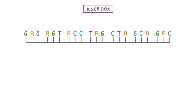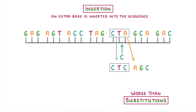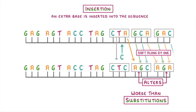An insertion mutation is a bit different — this time an extra base is inserted into the sequence somewhere. For example, if a C was inserted between the T and the A of CTA, then this codon would change from CTA to CTC because the A has been pushed along to the next codon. These mutations are actually a lot worse than substitution mutations because all the subsequent bases are shifted along by one, which alters all of the subsequent codons, meaning the amino acid chain after that point would be completely different.